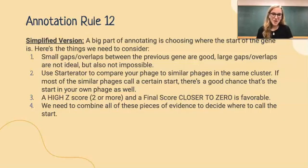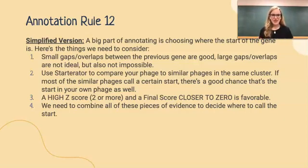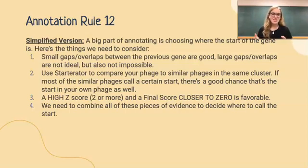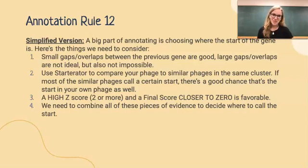Part 4 of rule 12 says: we need to combine all of these pieces of evidence to decide where to call the start. It's not going to be any one part of the rule in isolation — we're going to look at all of the evidence and see where it's pointing us. It's reminding us to be good scientists and look at all of the evidence rather than focusing narrowly on one thing. We need to observe all of the options and all the data.